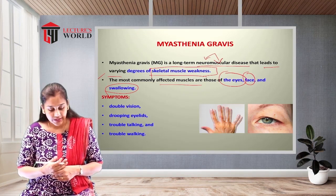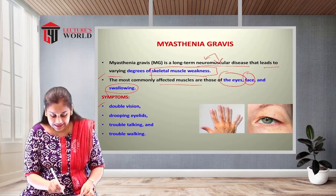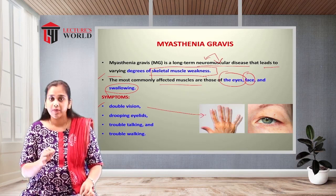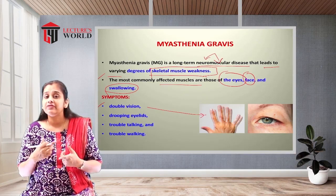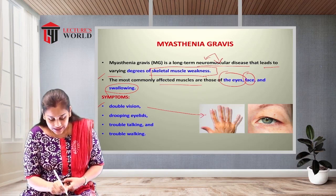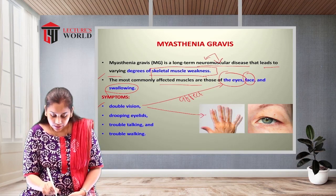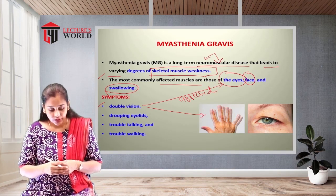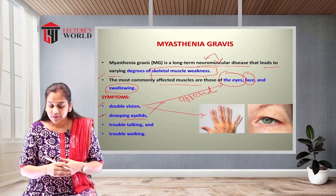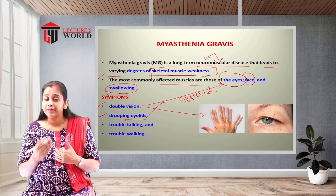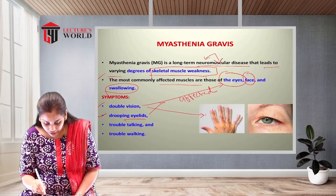The symptoms of myasthenia gravis include double vision and blurred vision — as shown in this picture — because of skeletal muscle weakness of the eye. There is also drooping of the eyelid due to weakness of the muscles related to the eye, as shown in this figure.